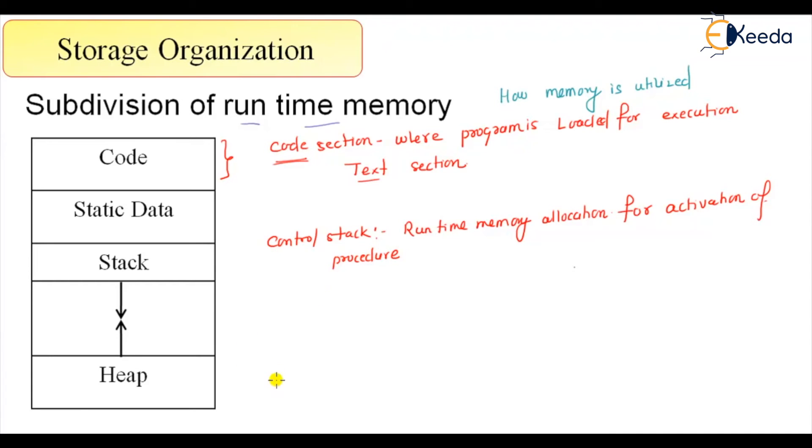Then there is the heap, and the heap is used for, in case of our understanding in terms of C language, the dynamic allocation of memory. For dynamic allocation of memory, we use the heap. Both can grow at runtime.